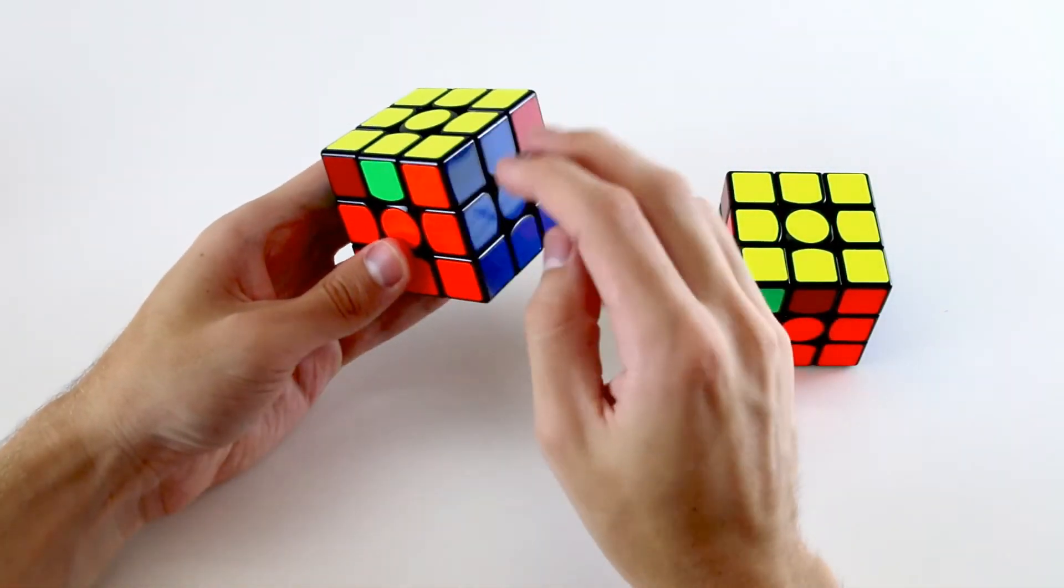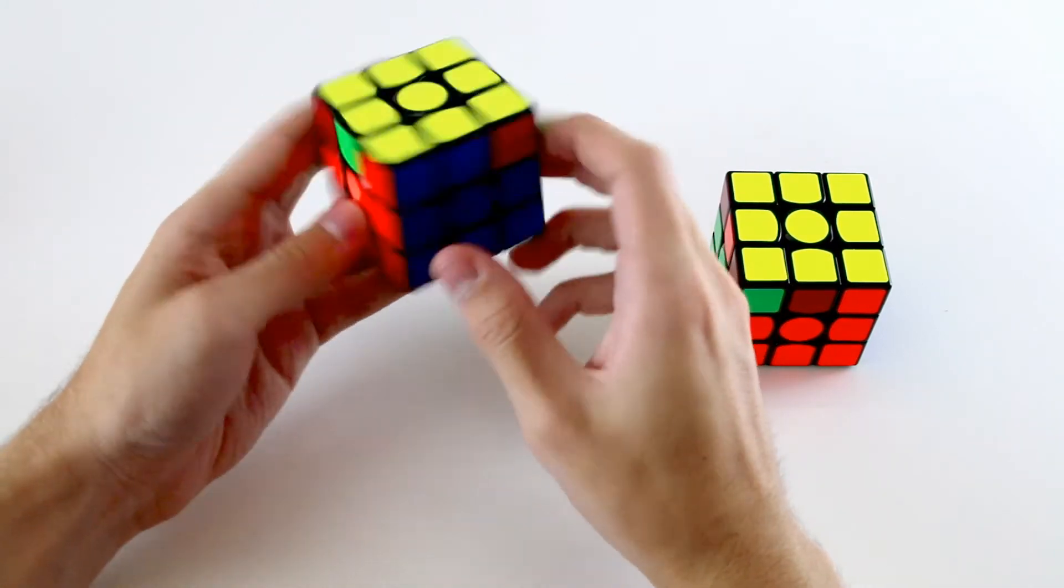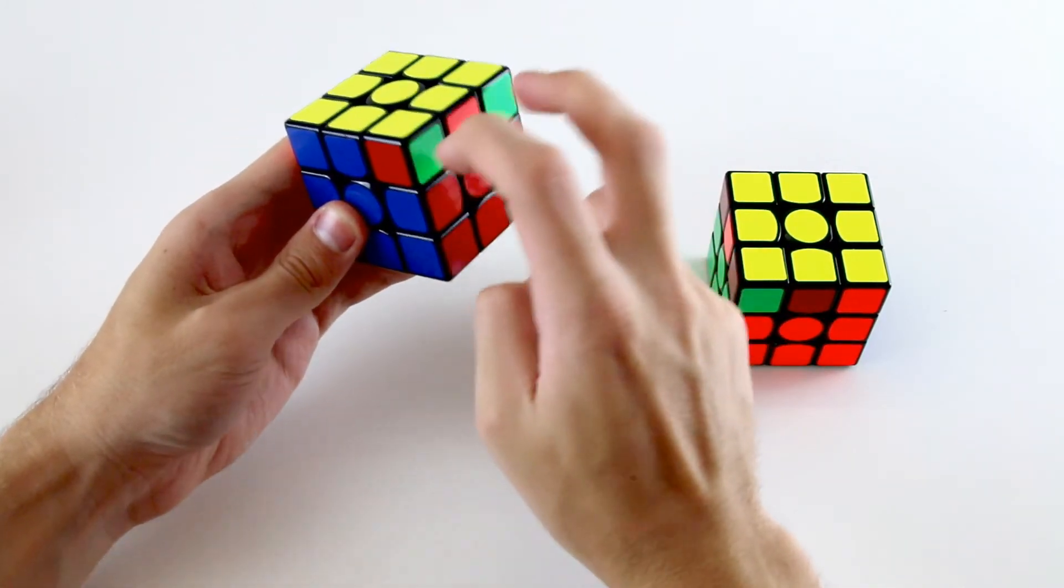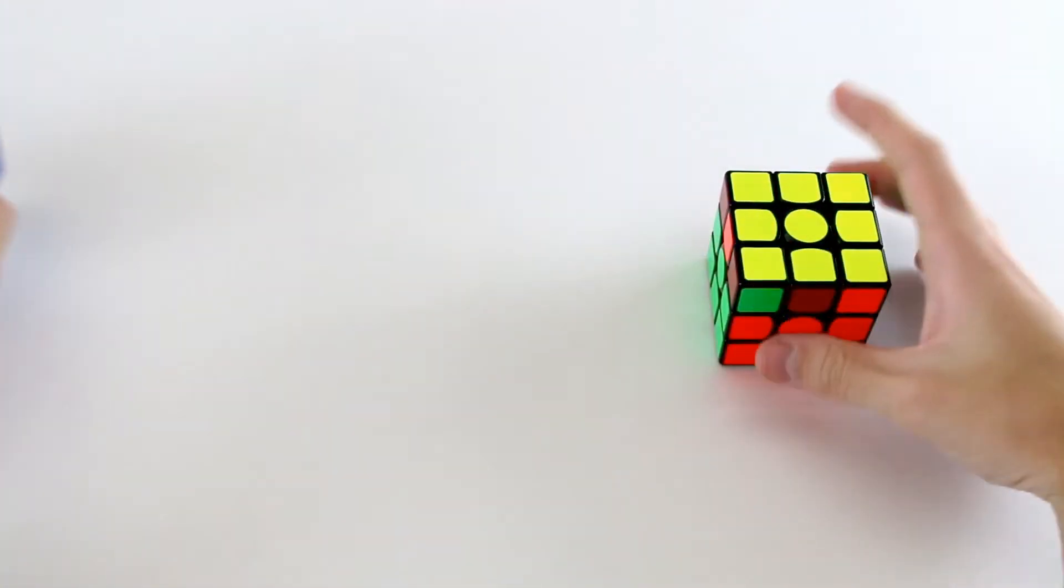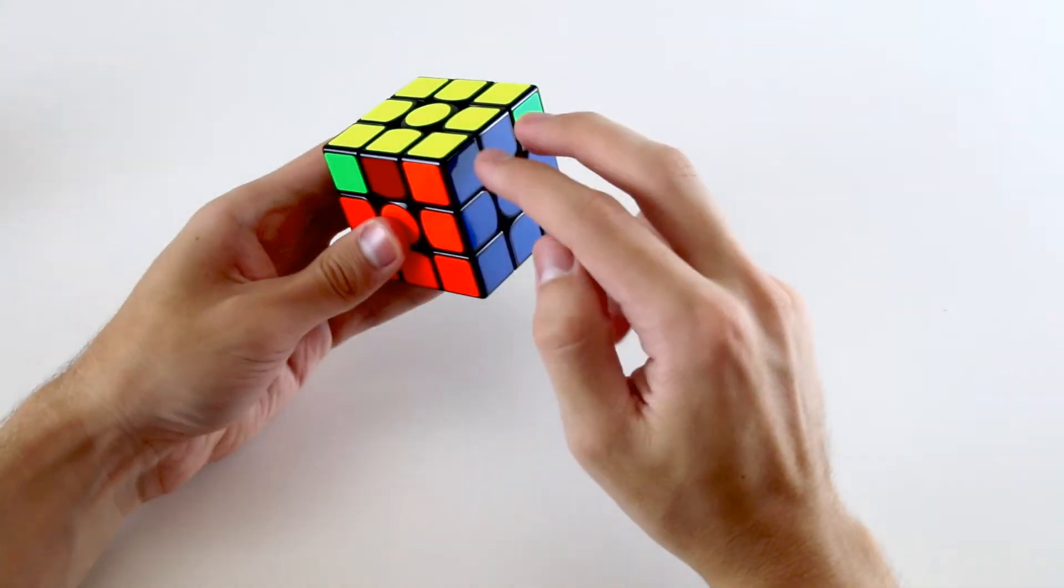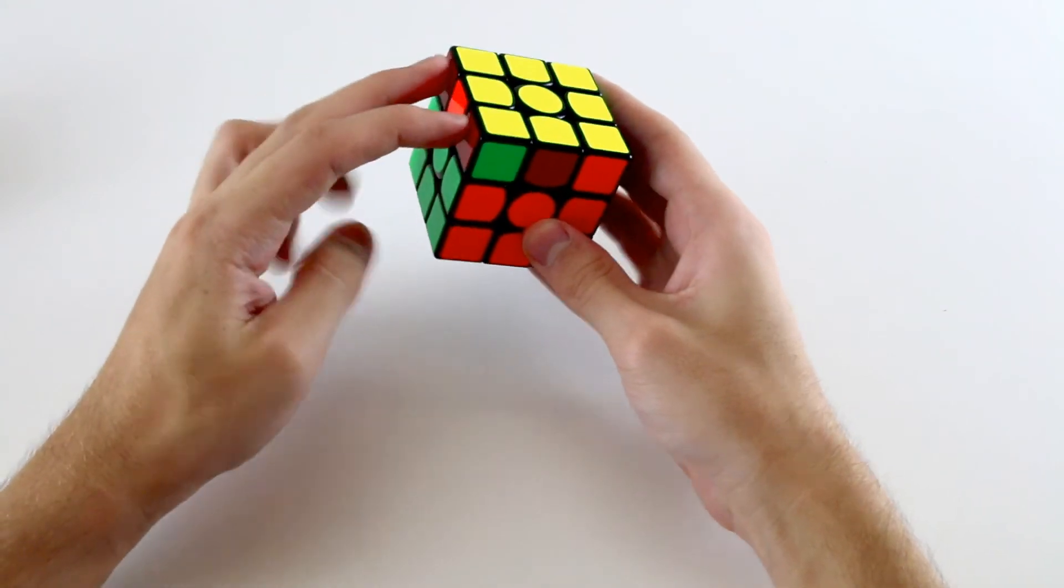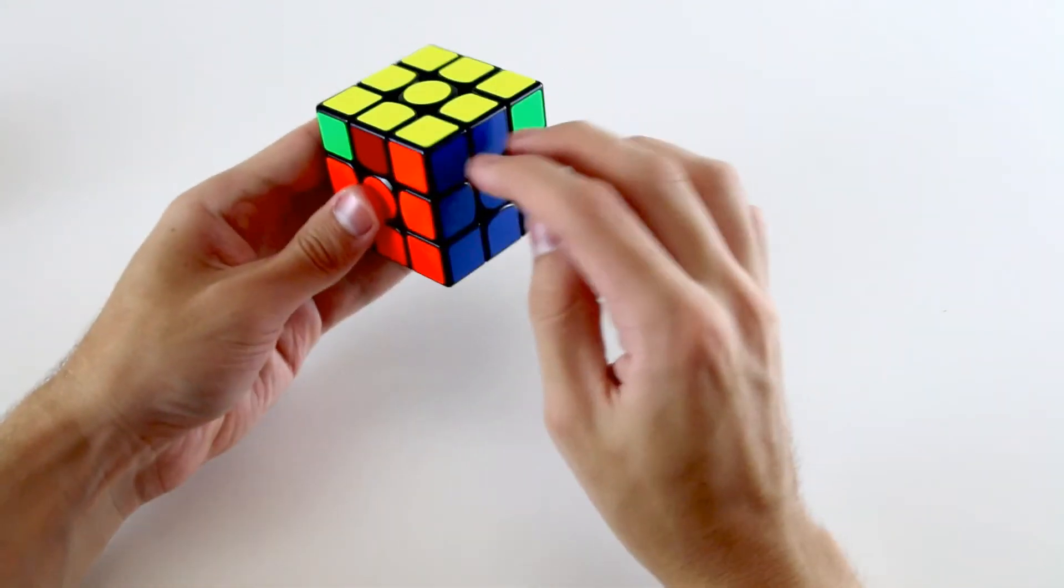The third case you can have is where the block is on the right here, and the matching corners are adjacent to it, over here like that. And the last case is again where you have the block on the right, but the matching corners are opposite the block, over here like this.